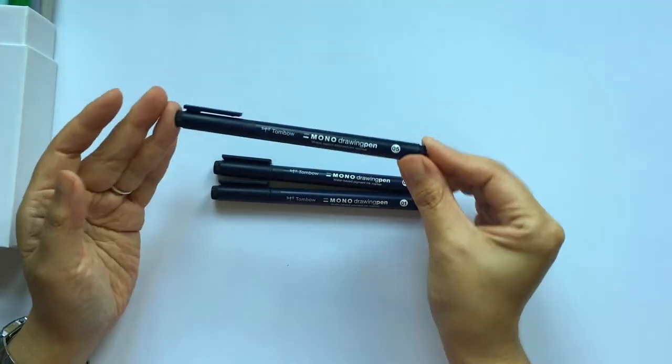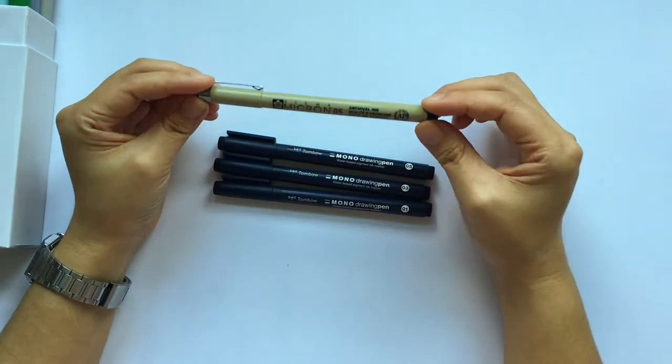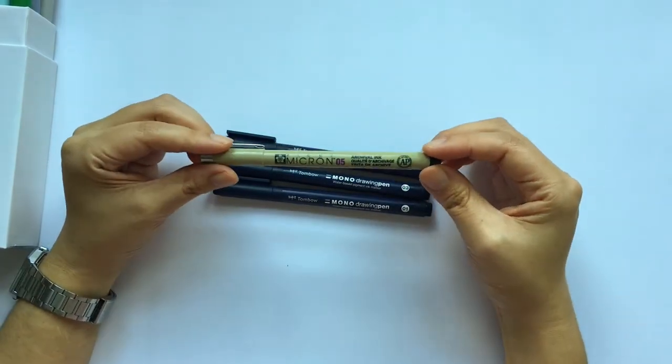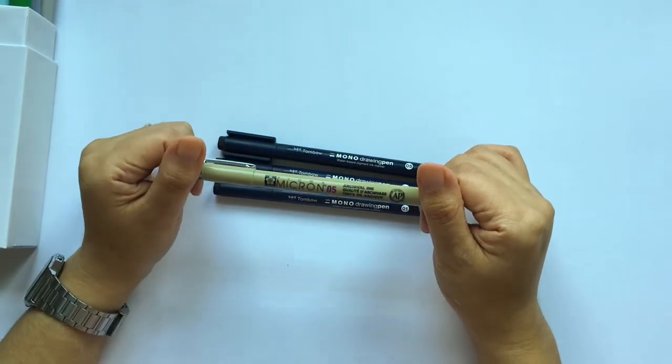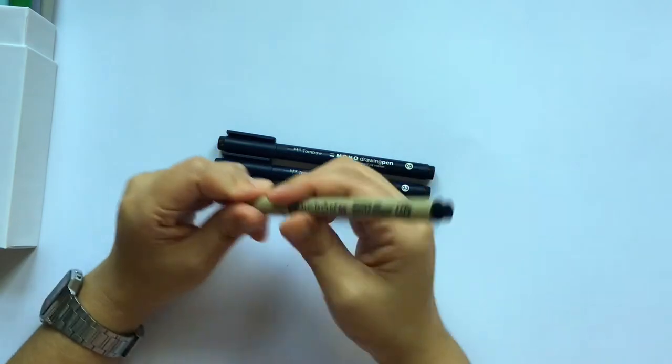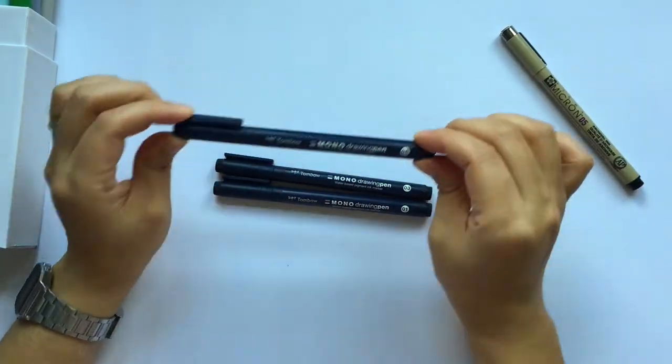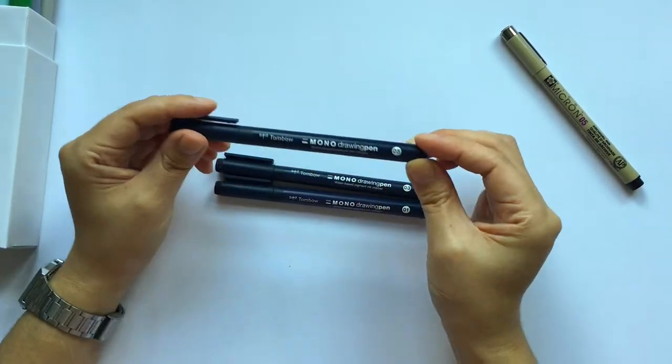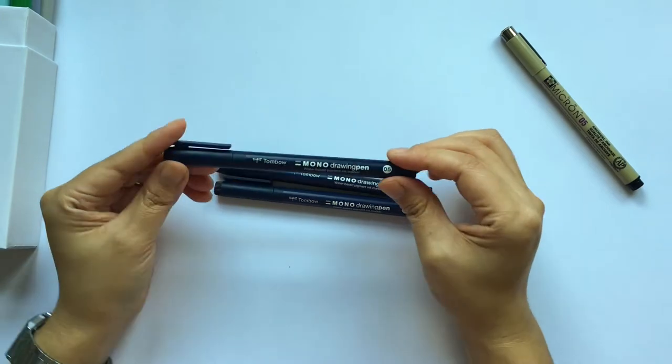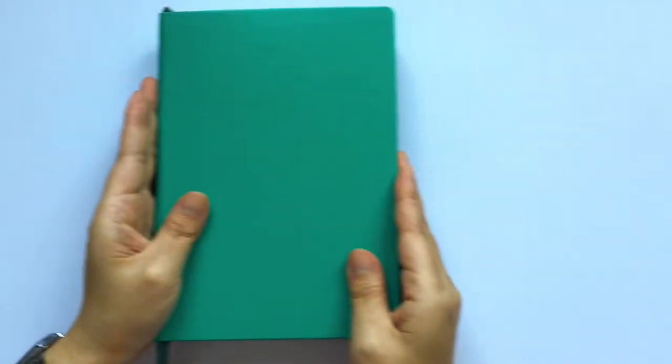The second set of tools I got, these Tombow mono drawing pens. So this was what I was using before, the industry standard Sakura Pigma Micron pens. But I always found that I had to really press hard to get a nice line. However, with these it's so much easier. So yeah, these are gonna take over my bullet journaling pens from now on.